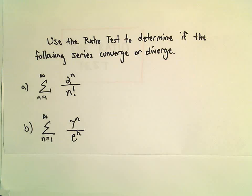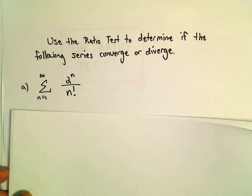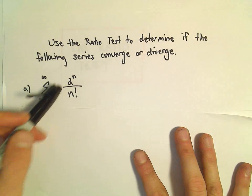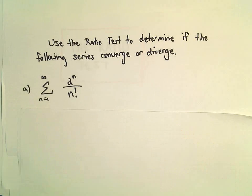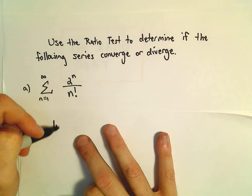So here we're going to use the ratio test in part A to decide if the series Σ(2^n/n!) from n equals 1 to infinity converges.